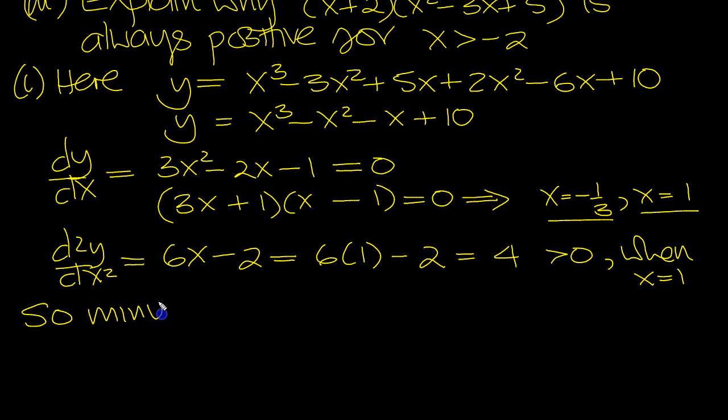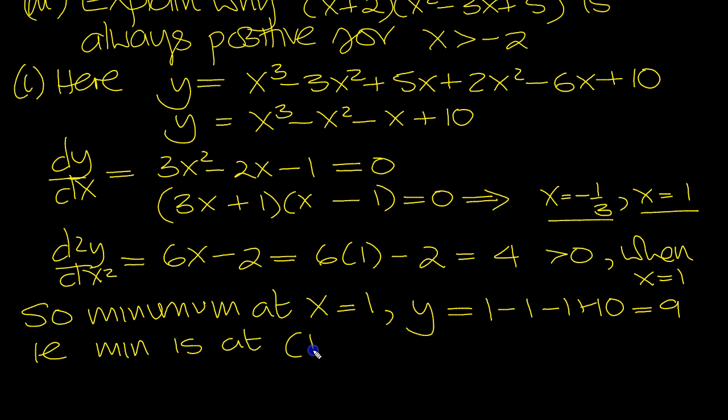So minimum at x equals 1. y is equal to, let's put 1 in, 1 here, 1 cubed minus 1 squared, which is 1, minus 1 again, plus 10. 11 minus 2 is 9, i.e. min is at (1, 9) coordinate.